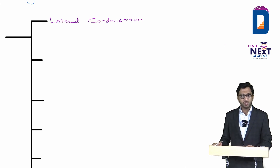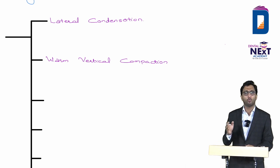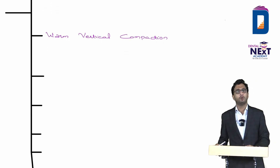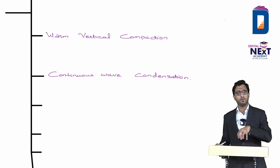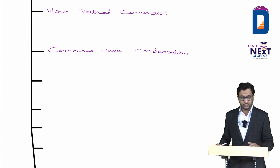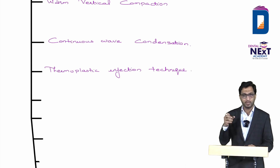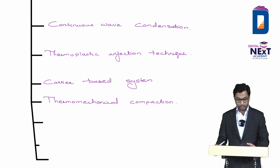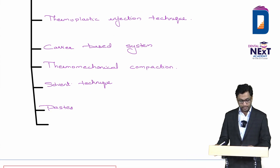The first type is lateral condensation, done by hand instrument. Then there is warm lateral condensation (the basic one is cold lateral condensation). Then warm vertical condensation, and a modification of warm vertical called continuous wave condensation — warm vertical is interrupted, continuous wave is not. Then thermoplastic injection, carrier-based, thermomechanical compaction, solvent-based, paste-based, and immediate obturation techniques.